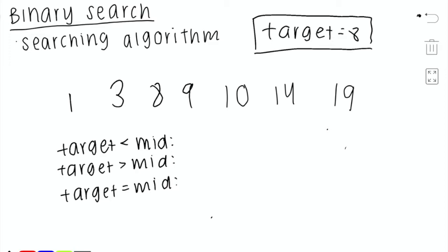The idea behind binary search is that we're always tracking the middle element in the array. In this case, the middle element is 9. Right now, the left and right boundaries for the array are index 0 and index 6 — these are the two ends of our array. So we want to check: is our target element of 8 greater than, less than, or equal to mid? In this case, our target element is less than the middle element of 9, so we want to decrease our upper boundary.